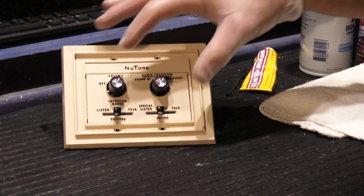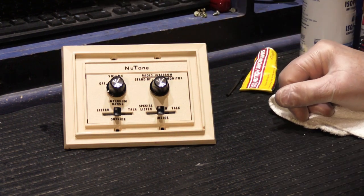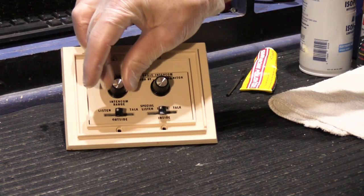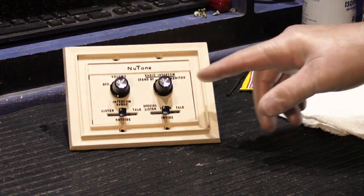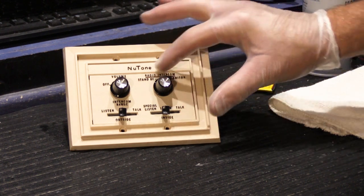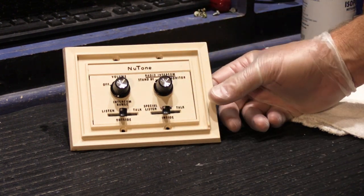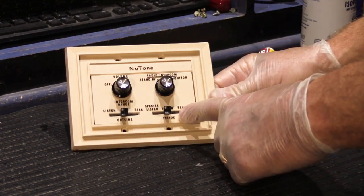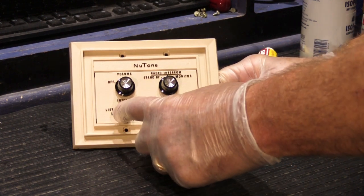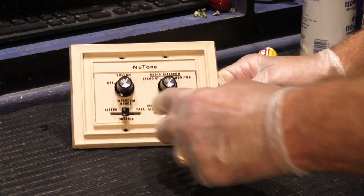What you have here are the same controls that you have on all remote stations for an N2561 system. You have a volume control for the speaker, your selector switch with three positions: radio, intercom monitor, and standby, and then you have your inside intercom control, talk and listen, and outside talk and listen.